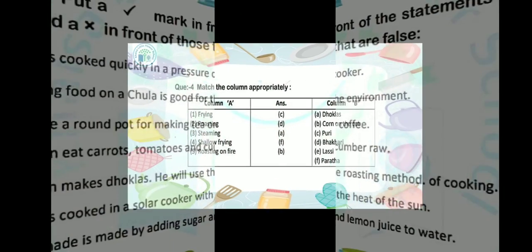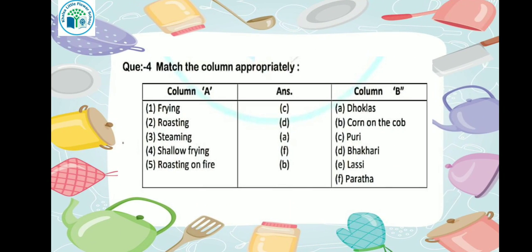Now let's see match the list. First is frying — what do we make by frying? We make puri by frying. So our answer here will be option C — puri.